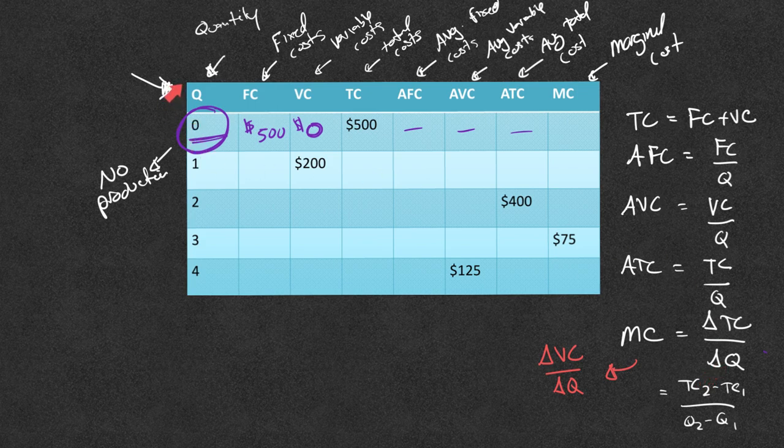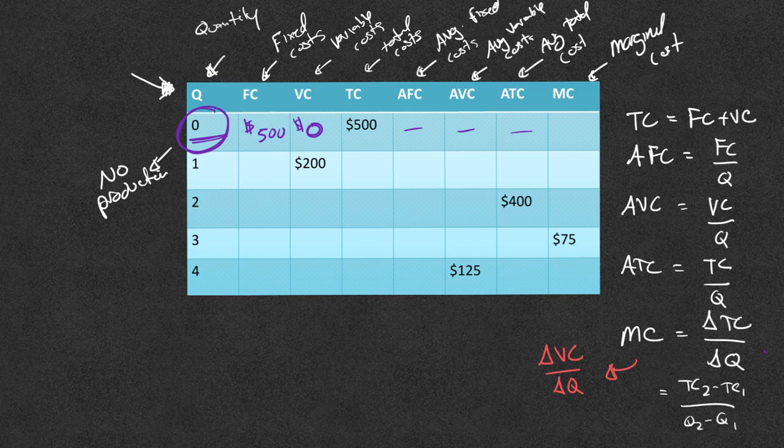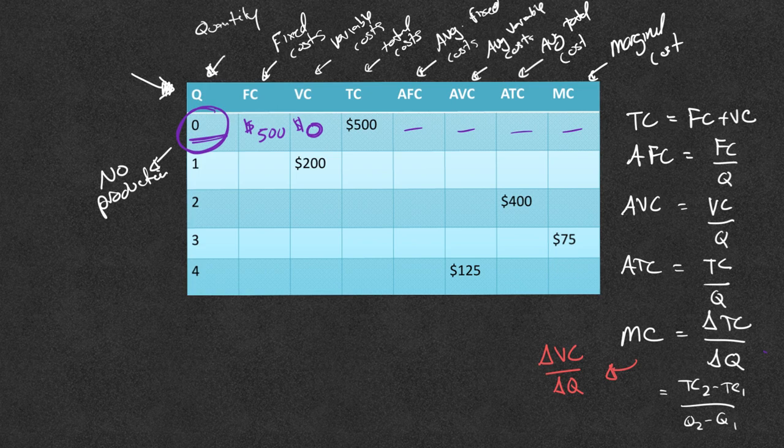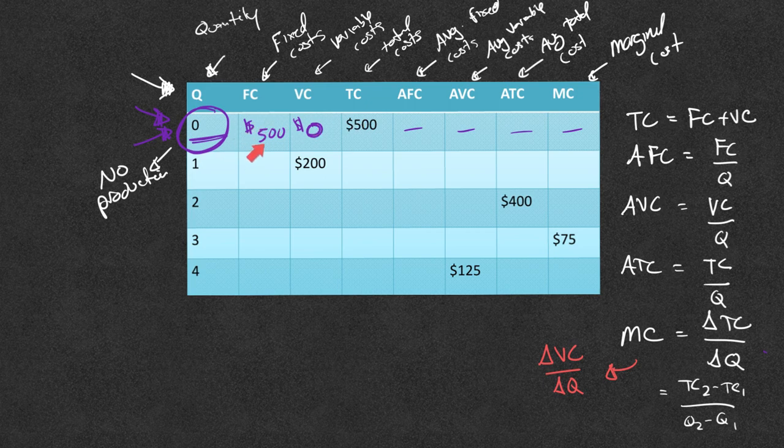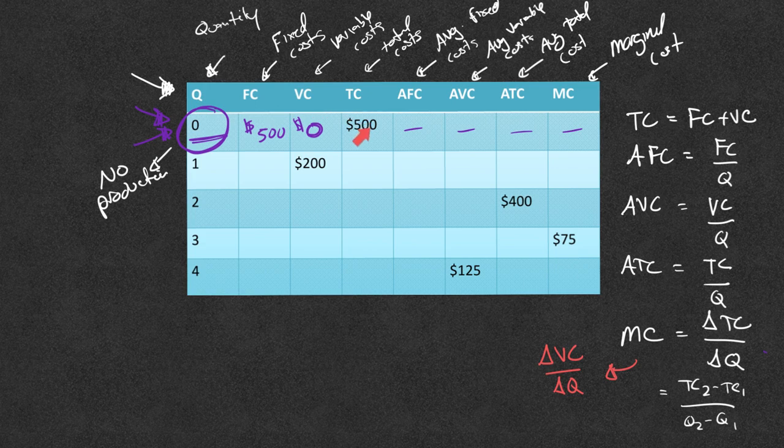But also the marginal cost is my change in quantity. Well, you can't go from like negative 1 production to 0. So again, there really isn't a change. So we're also going to put a dash for marginal cost. Usually the easiest row is going to be that quantity equal to 0 with no production. They'll either give you your total cost, that way you can figure this out. Or they might give you a fixed cost and you have to realize variable cost is zero and then you can figure out the total cost.